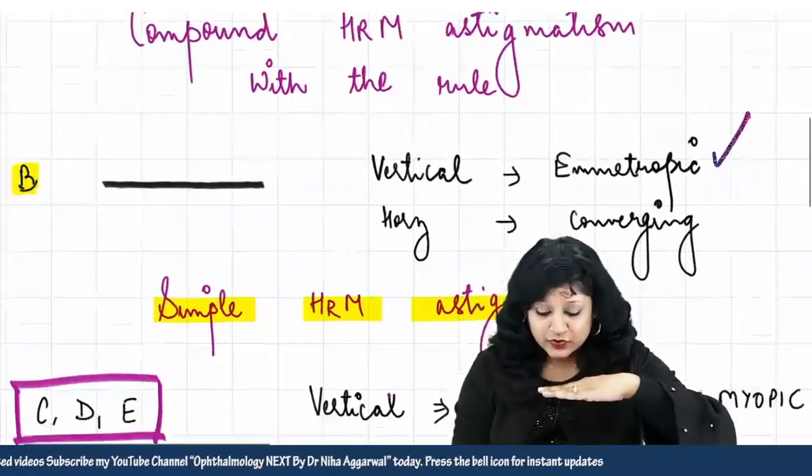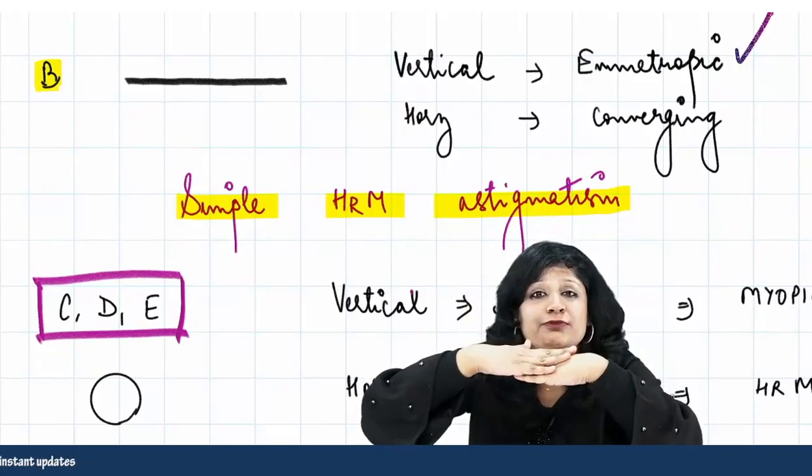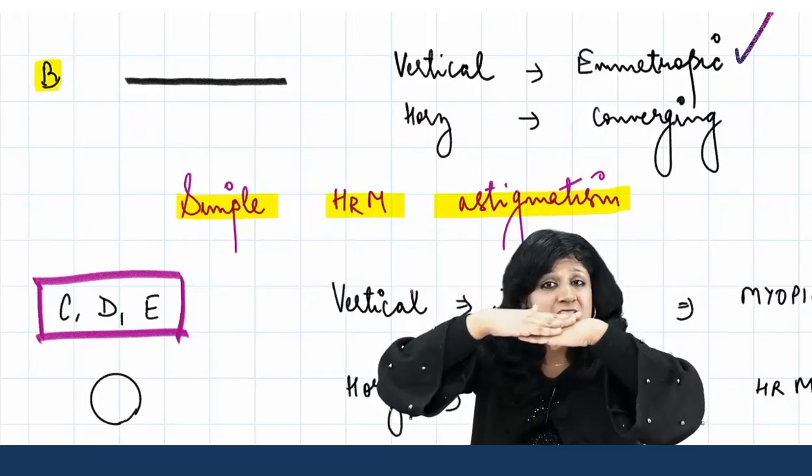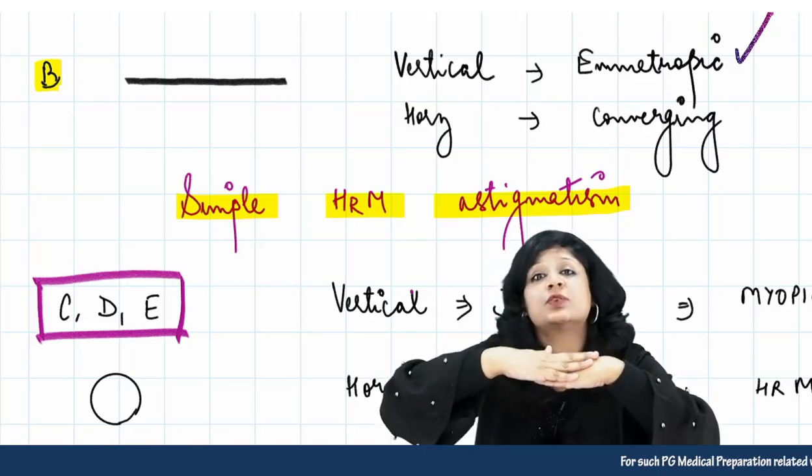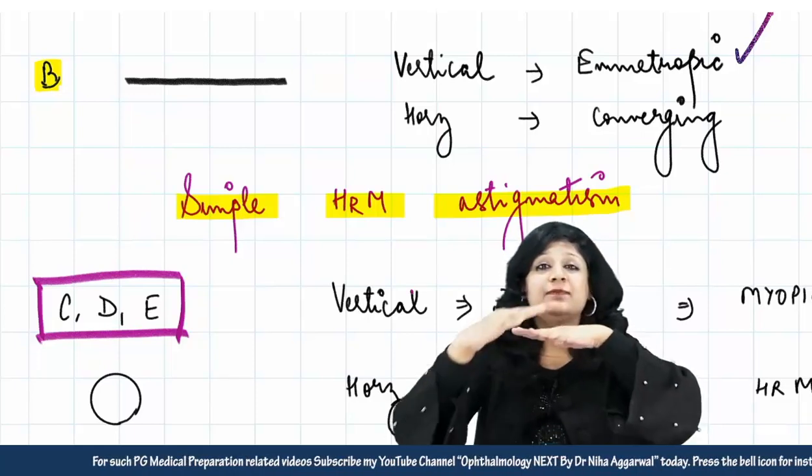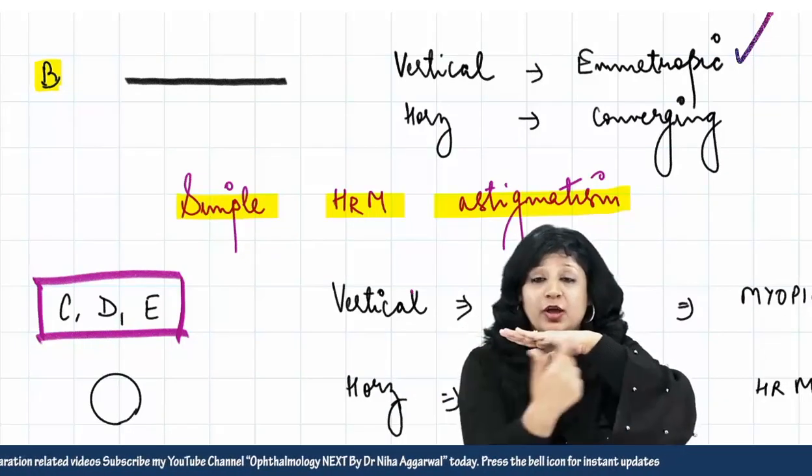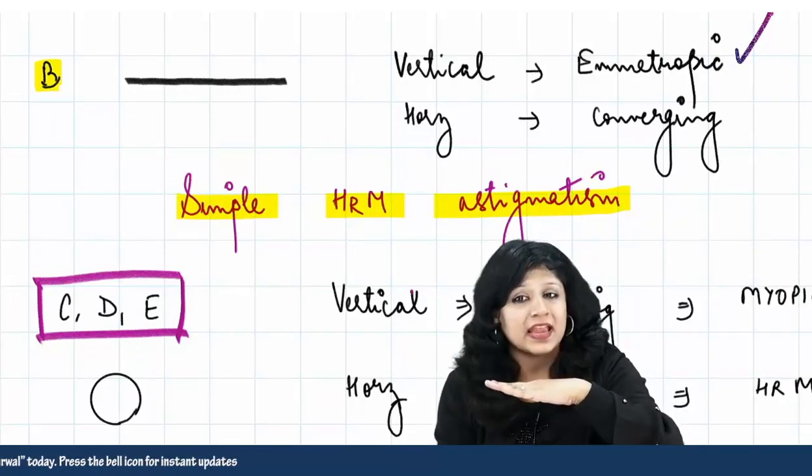Now as you reach point number B, what is happening? The vertical rays are coming to focus. Now these rays are focused, so it becomes emmetropic. The moment one of the meridians becomes emmetropic, it becomes simple astigmatism, and because the horizontal meridian is converging, it becomes simple hypermetropic astigmatism.